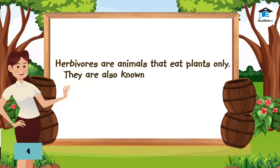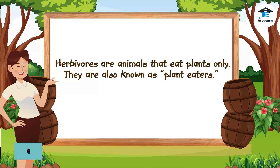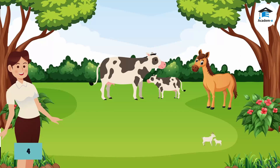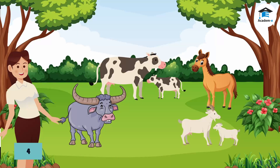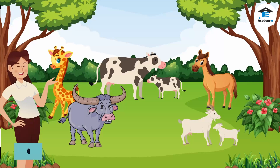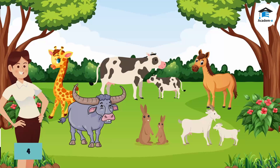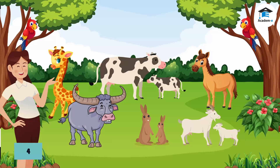Herbivores are animals that eat plants only. They are also known as plant eaters. Cows, horses, goats, and carabaos eat grass. Giraffes eat the leaves of plants. Rabbits also eat grass, cabbage, carrots, and other leafy vegetables. Some birds like parrots eat fruits and seeds. Butterflies suck nectar from flowers.